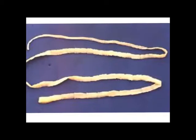Tapeworm larvae, which live in a host called the intermediate host before moving to the final host, live in various types of tissues, such as the liver, lung, muscle, body cavity, brain, and sometimes even the eye.